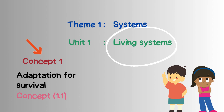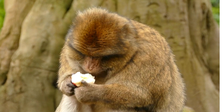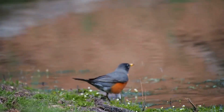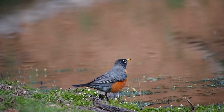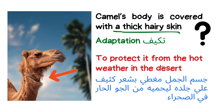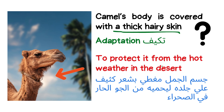Now we will study Unit 1 — Living Organisms — the first concept, which talks about adaptation for survival. The unit's title is Living Systems, meaning we will talk about living organisms like humans, animals, and plants. Any living organism has some characteristics and features that help it to live and survive. 'Survive' means to keep the animal alive — not to die. For example, as you see here, this is a camel. The camel's body is covered with thick hairy skin to protect it from the hot weather in the desert so it can survive. This is an adaptation.